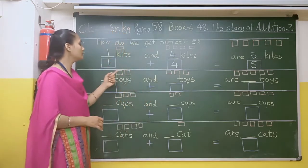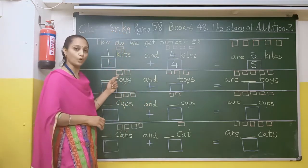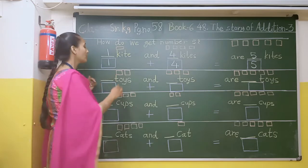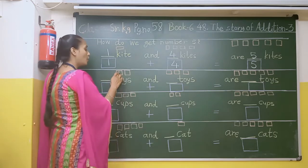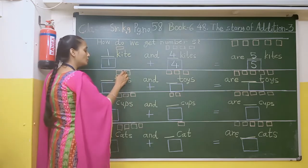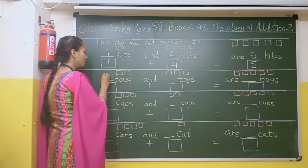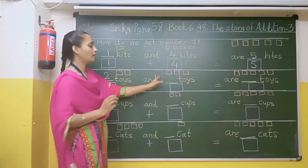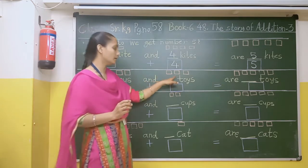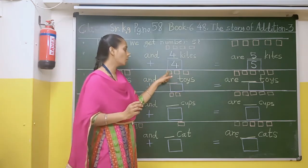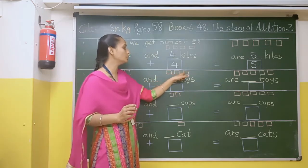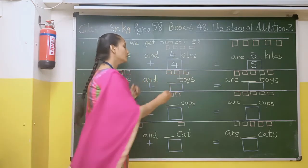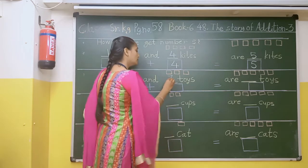Here there is an image of a toy. How many is it? 1, 2. So here we will write number 2. And here there will be another toys: 1, 2, 3. So here we will write 3.